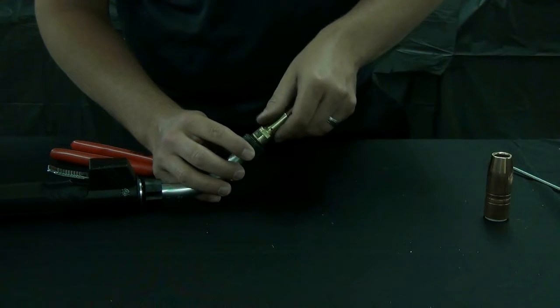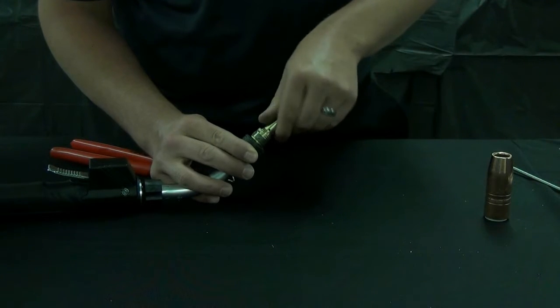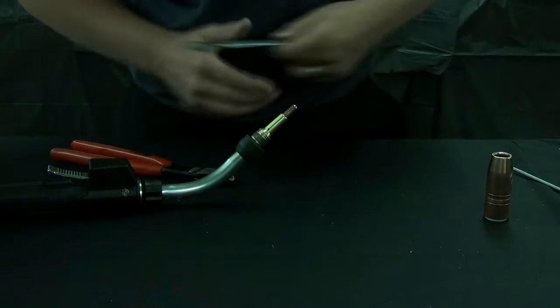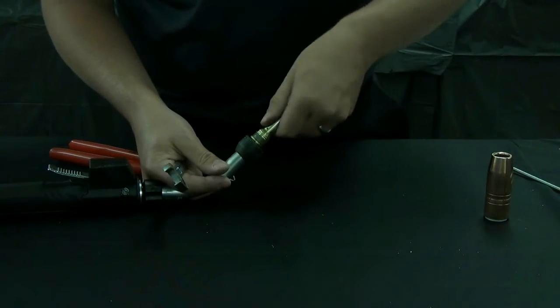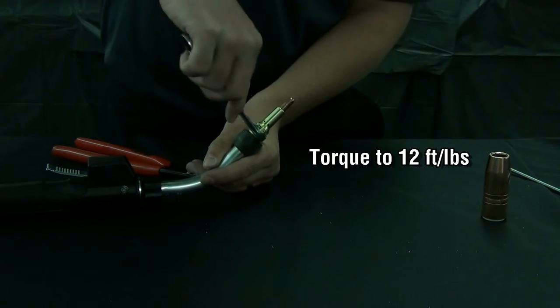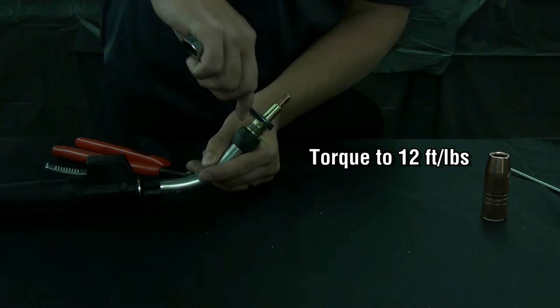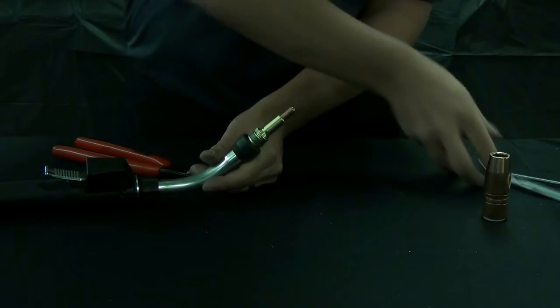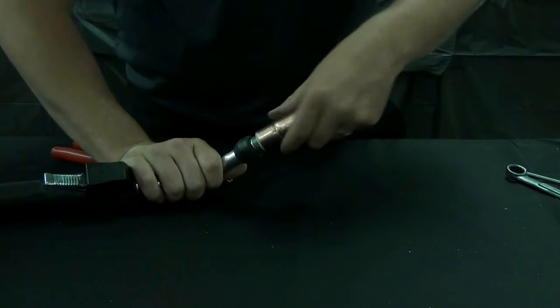Take the retaining head and thread it back onto the neck. You will feel some resistance when threading the retaining head back on from the liner. Torque it on with your five-eighths wrench and reinsert your nozzle.